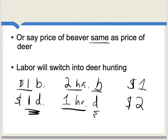What Smith is saying here is that if the cost of production ratio is two to one — two hours to one hour — then the price ratio for beaver to deer has to be two to one as well. And that's what equilibrium is going to look like.